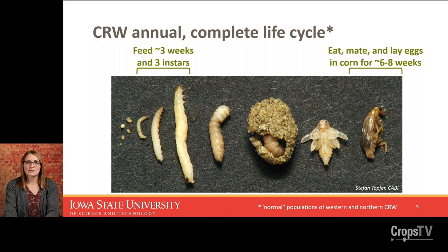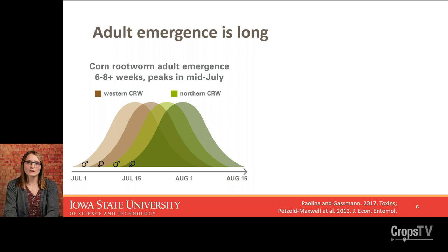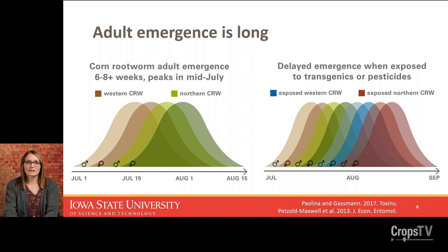We'll see them throughout the duration of the growing season — eating, mating, and laying eggs for about six to eight weeks in corn. The adult emergence period is quite long, six to eight weeks, and then they're feeding and mating for six to eight more weeks. If you were scouting a field with both species, the first beetles to emerge would be western corn rootworm males, then western females, then northern males, then northern females — males emerge before females, and westerns typically emerge before northerns.